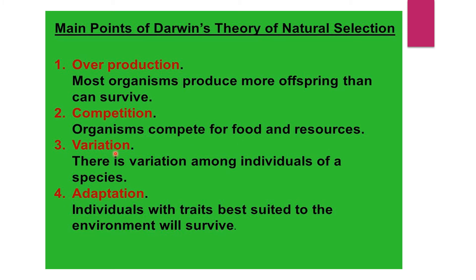The third point is variation — there is variation among individuals of a species. The fourth one is adaptation — individuals with traits best suited to the environment will survive.